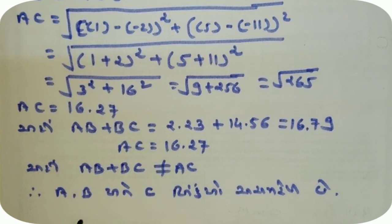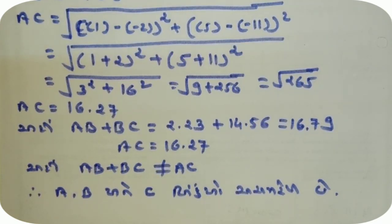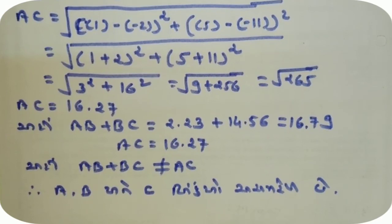અને દેખ, માટે બિંદુ સ-મ-રેક હોવા જરૂરી છે. આ જ રીતે, સ્વ-ધ્યા-ય ના બાકીના દાખ-લ-ઓ કરવાના, priy no kori karik.